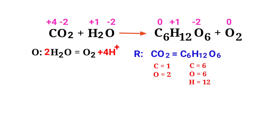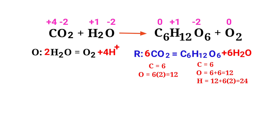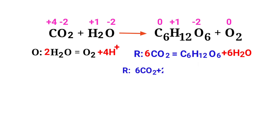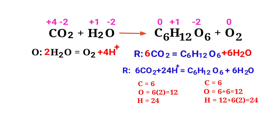Now balance the atoms in the reduction half reaction. To balance the carbon atoms, we put a coefficient of 6 in front of CO₂. The carbon atoms are balanced. To balance the oxygen atoms, we produce water molecules. The oxygen atoms are balanced. To balance the hydrogen atoms, we produce H⁺ ions. The number of atoms are now balanced in the reduction half reaction.